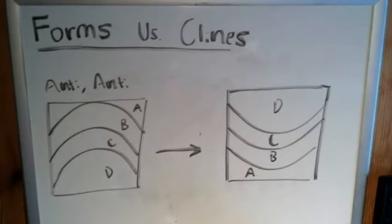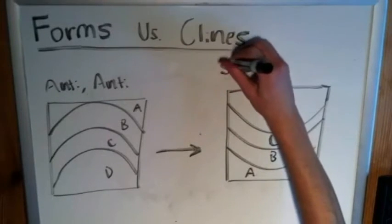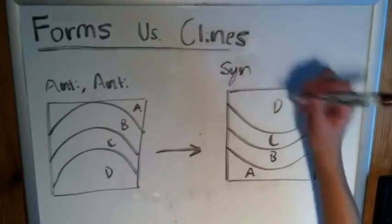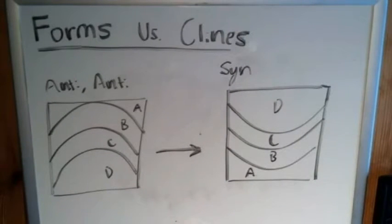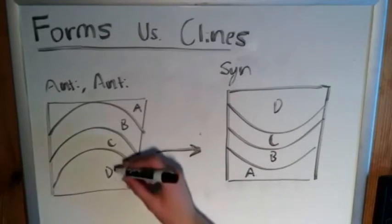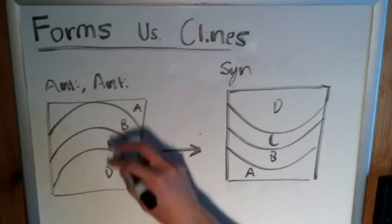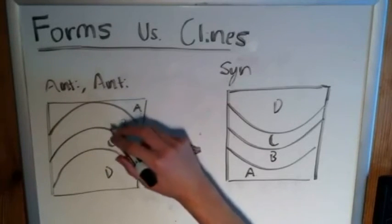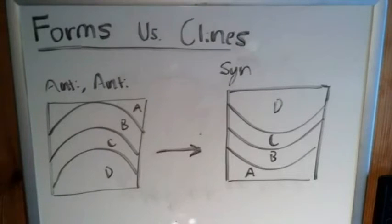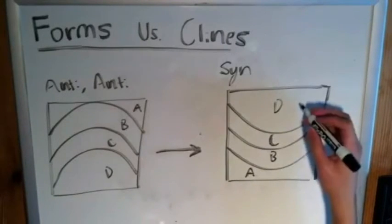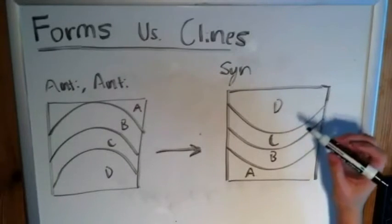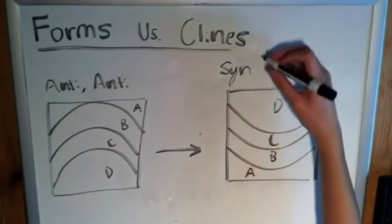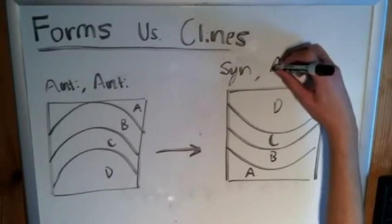Well, right off the bat, you look at that and you say, well, that's a synform. And it's a synform, but it's not a syncline. Because recall from this that if this is just after one folding process has taken place, D must be older than the rest. So in this case, D is still older than the rest, and it's still in the middle. Therefore, it's a synformal anticline.